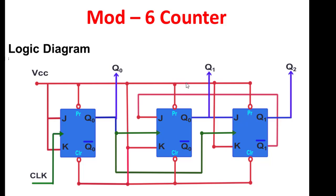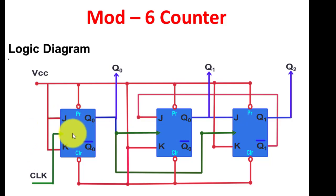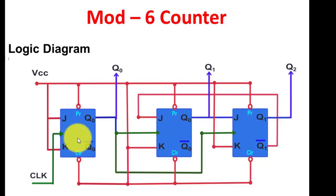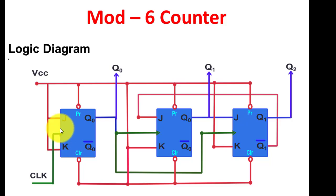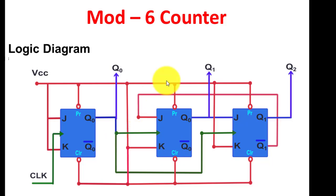Next is the mod-6 counter. We have made one change: we introduced a third flip-flop on the left. The last two flip-flops remain the same. This new flip-flop operates in toggle mode, giving 0, 1, 0 with respect to the clock. Mod-2 times mod-3 equals mod-6, so this becomes a mod-6 counter and will count up to six.